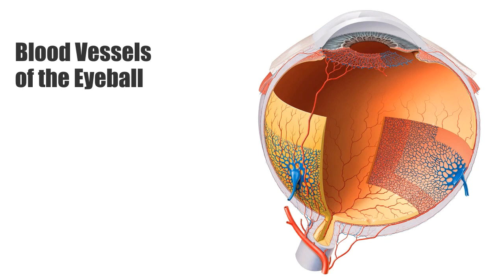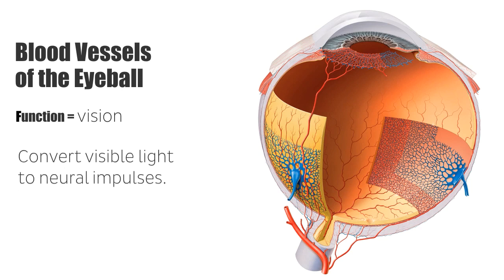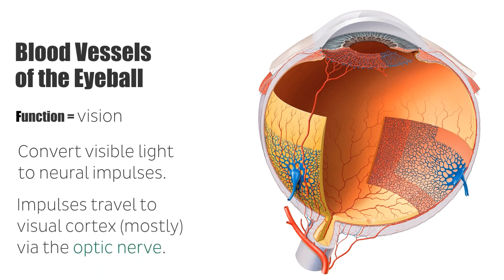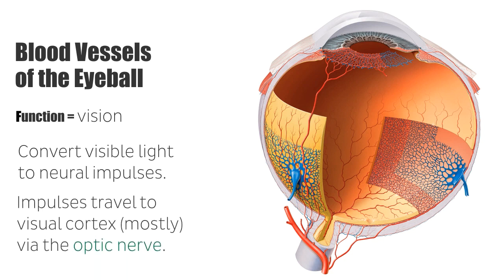Before we have a look at the blood vessels, let me give you a brief overview of the function of the eye. As you all probably know, the main function of the eyes is the perception of vision. The eyes essentially convert information contained in visible light into electrochemical impulses, which then travel to our brain via the optic nerve. This information is then processed by our brain, mostly by the visual cortex, which then builds a representation of our surrounding environment.